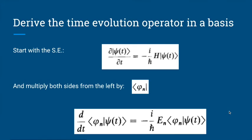From here, we need to derive time evolution, since this is all about time-dependent quantum mechanics. It's useful to derive a time evolution operator — something we can operate on a wave function and propagate it forward in time. We take the Schrödinger equation and multiply both sides by one of these basis functions.